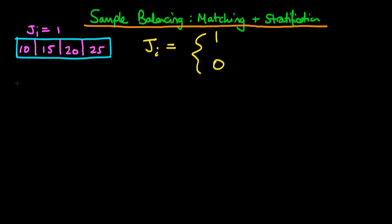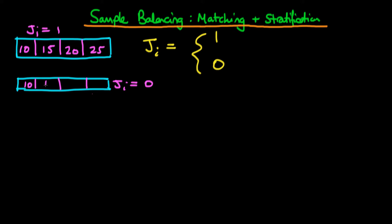The idea is that we would then compare this with corresponding strata from those individuals who are untreated. This bottom bar represents those who didn't choose on-the-job training. What we could do is pick particular individuals to go into each of these sub-samples, making each sub-sample look very similar to those of the treated sample in terms of past year's level of sales. Essentially, we have matched each of these sub-samples in terms of past year's level of sales.